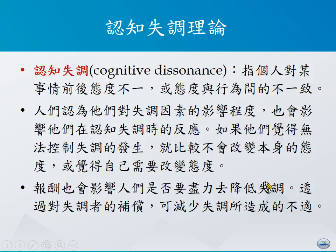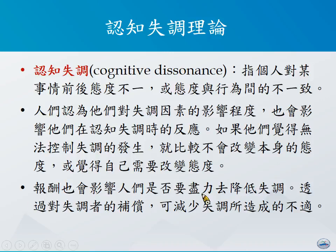这就可以用认知失调理论（Cognitive Dissonance）来解释。认知失调理论泛指个人对于事情前后的态度不一致，或个人对于态度跟行为之间的不一致。失调因素的影响程度会影响到他们对认知失调的反应。如果他们觉得自己完全无法控制失调情形的发生，就比较不会去改变本身的态度；而得到的报酬程度的高低也会影响是否想要降低失调的可能性。